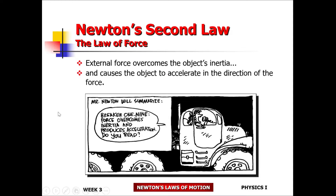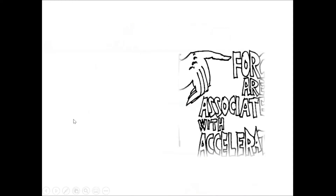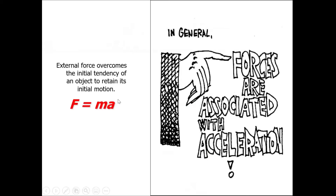An external force is going to overcome your inertia. It's going to make you go faster, slower, or it's going to make you change direction in the direction of the external force. A force acting on a system is going to cause it to accelerate. Force acting on a mass is going to cause it to accelerate — that's the second law.